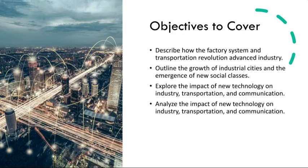We're going to start by seeing how the factory system and the transportation revolution revolutionized industry. The factory system, characterized by a mechanized type of production and the concentration of labor in centralized locations, vastly improved manufacturing efficiency. With the invention of new machinery and the implementation of division of labor, industries such as textiles, iron, and coal mining experienced remarkable growth. Factories became centers of production and contributed significantly to the mass production of goods.